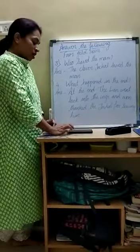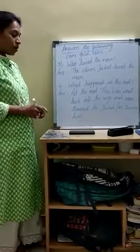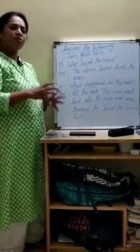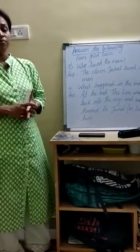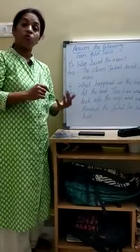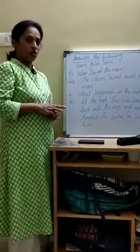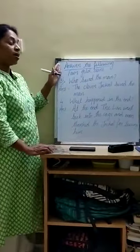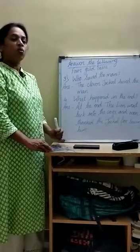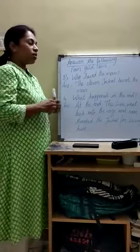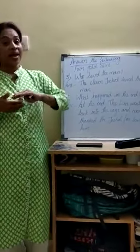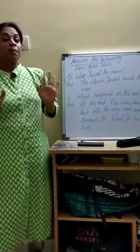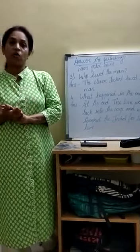Before that, there is one question on page number 14 in blue color. It says 'higher order thinking skills.' Higher order means after learning the lesson, we come to a conclusion — what is the moral we have learnt? The moral of this story is: when someone helps us, we should thank them. We should not do anything wrong with them.